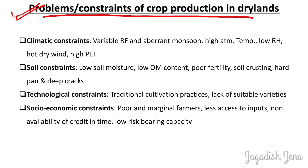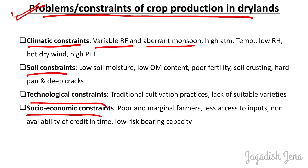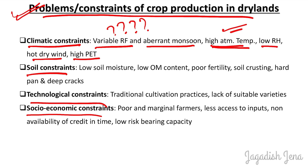The problems and constraints of crop production in dryland areas include climatic, soil, technological, and socioeconomic constraints. Climatic constraints include variable and below-average monsoon rainfall with uneven distribution, high atmospheric temperature, low relative humidity, hot dry winds, and high potential evapotranspiration. These weather attributes are not suitable for crops, resulting in more frequent crop failure.